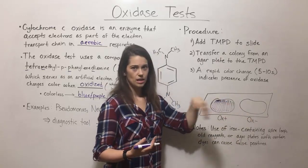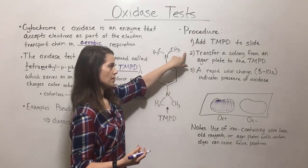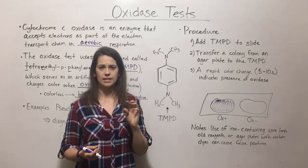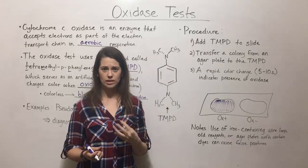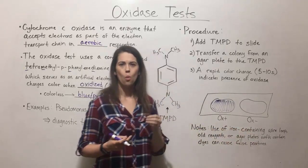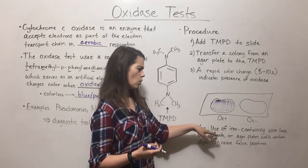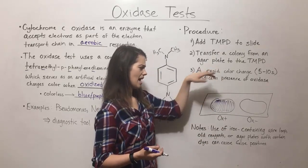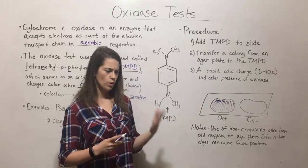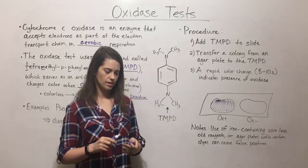If the TMPD remains colorless, then it would be oxidase negative. A couple of things to keep in mind: when transferring a colony from the agar plate to the TMPD, use a sterile wooden stick or sterile plastic loop — not something that contains iron, because a metal wire loop contains iron and that can give a false positive. Use of old reagents and agar plates that have certain dyes in them can also sometimes give false positives, so it's important to use the right kinds of equipment when doing the oxidase test.